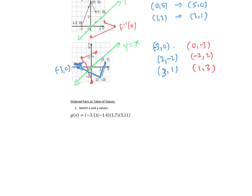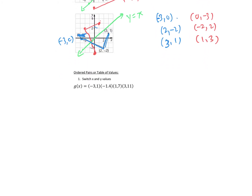If you have ordered pairs or a table of values, it's very simple — it's exactly what we just did. For the inverse of g of x, we just switch the coordinates of each point. So negative 3, 1 becomes 1, negative 3; negative 1, 4 becomes 4, negative 1; 1, 7 becomes 7, 1; and 3, 11 becomes 11, 3. That's pretty straightforward.